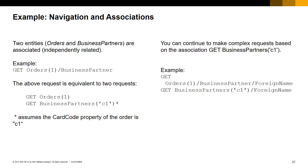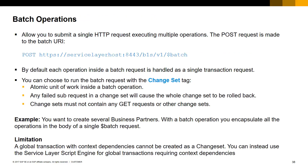More complex requests can be built based on the associations. This is shown in the second example on this slide, which gets the foreign name of the business partner directly. Let's talk about batch operations. You can send several operations in a single HTTP request with the batch operation command. A batch request is submitted as a single HTTP POST request to the batch URI, and all operations will be listed in the body of the batch request. By default, each operation inside a batch request is handled as a single transaction request. You can choose to run all or some operations inside a batch request in a global transaction — meaning all operations will be committed or rolled back together — by using the change set tag. If one of the operations inside a change set fails, the whole set of operations in the same change set will be rolled back.